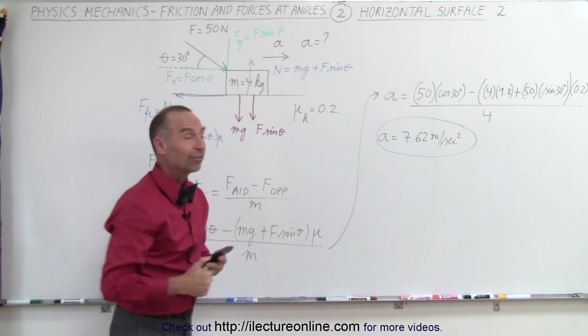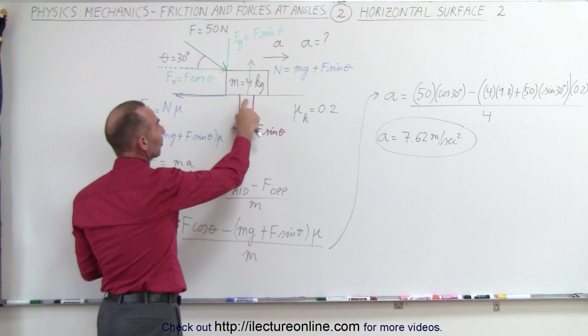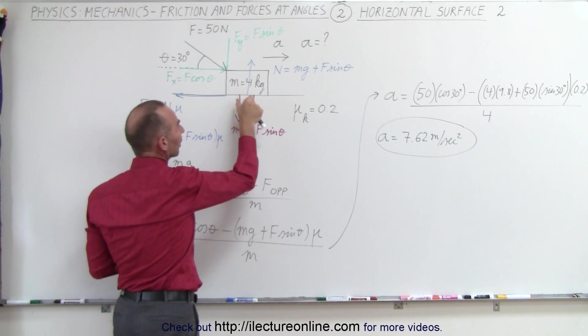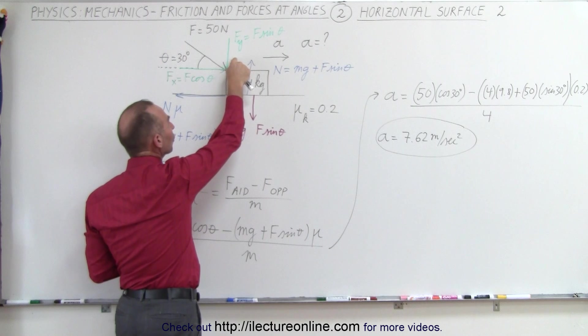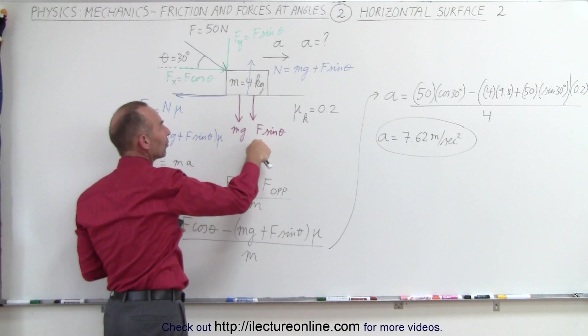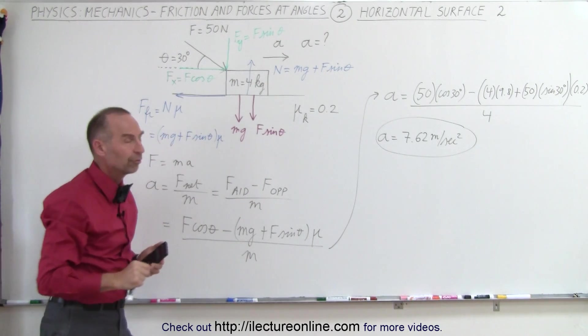All right, so that's fairly straightforward. The only thing we have to watch out for is that the normal force is not simply going to be just the weight of the block, but it's going to be the weight of the block plus the y component of the force pushing against the block. So we have to add those two together to get the normal force, which will then translate into the friction force.